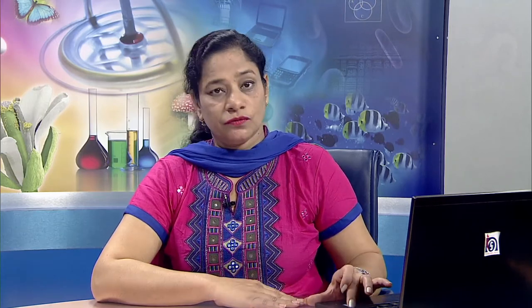Coal formation takes place over thousands of years. First, partially decayed plant matter in swamps forms peat, which under immense heat and pressure turns into lignite, a brown color coal with low cost and low sulfur content. In due course of time, under immense heat and pressure, bituminous coal or soft coal is formed, which is generally used as fuel. Again under immense heat and pressure, anthracite or hard coal is formed, which is a desirable fuel with low sulfur content.